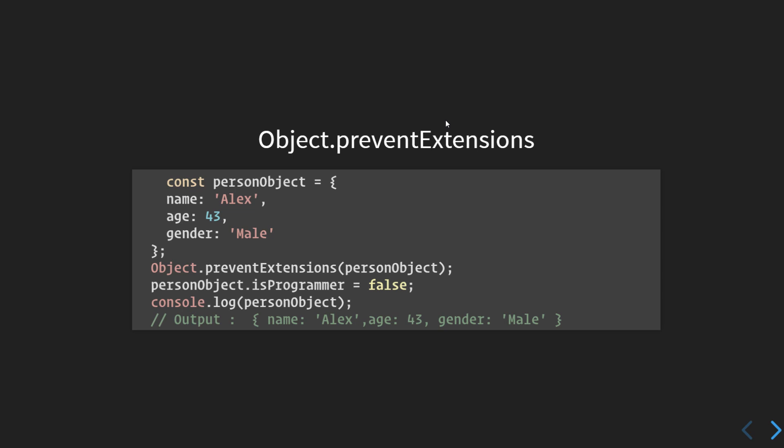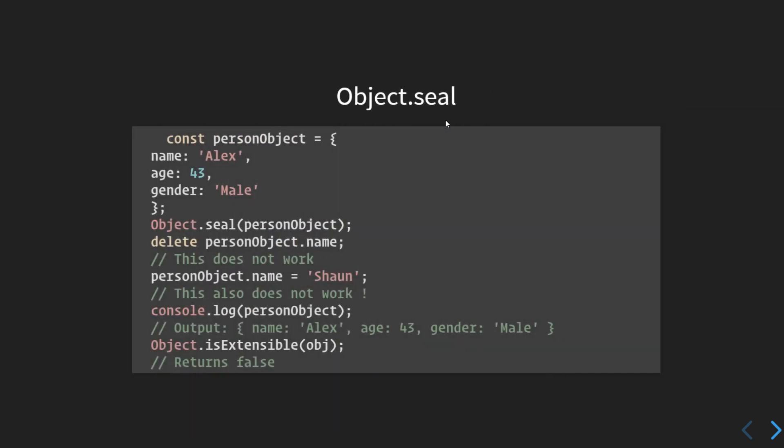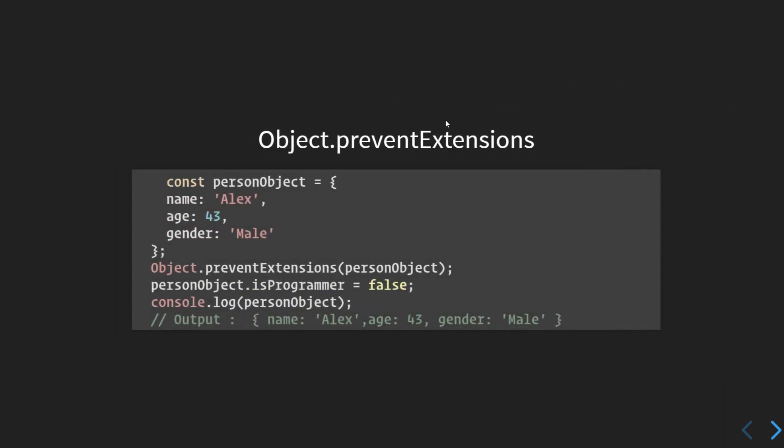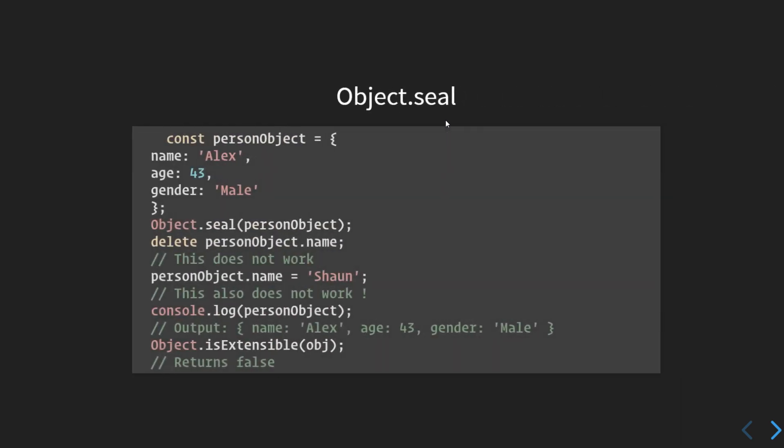So it prevents future extensions to the object — it takes an object and makes it non-extensible. Moving on, if we want to check whether an object is non-extensible or not, we can simply log Object.isExtensible(person). If it returns true, you will be able to add more properties to the object. You can check extensibility using Object.isExtensible().